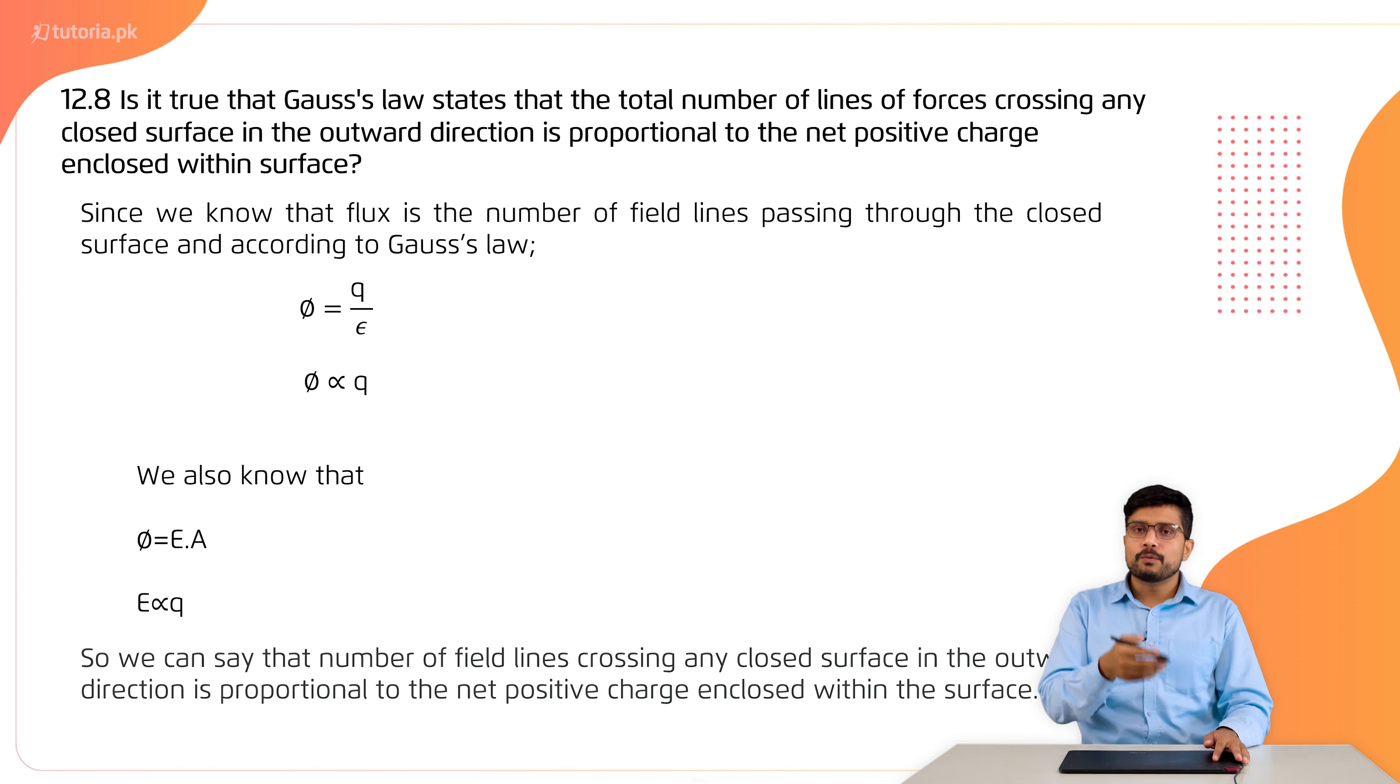E is directly proportional to Q. So we can say that the number of field lines crossing any closed surface in outward direction is proportional to the net positive charge enclosed within the surface.